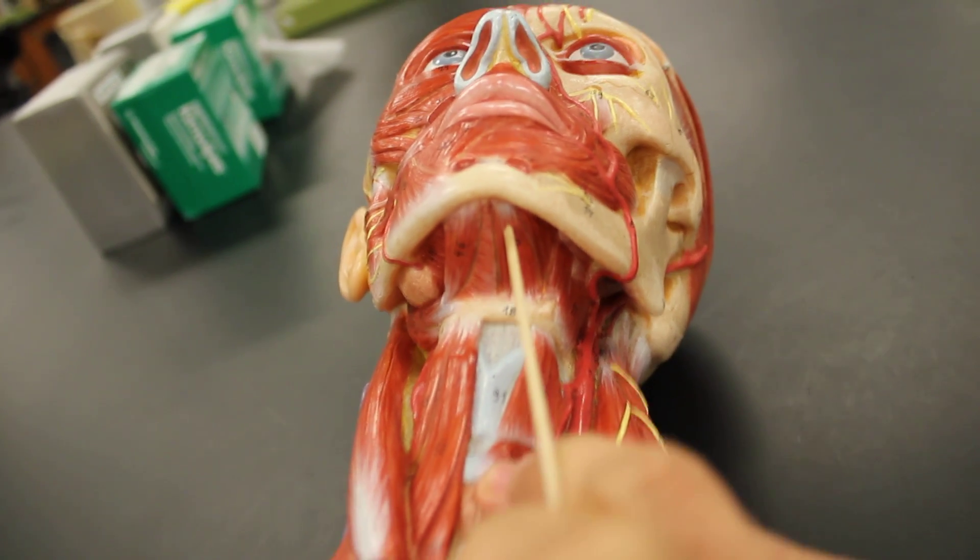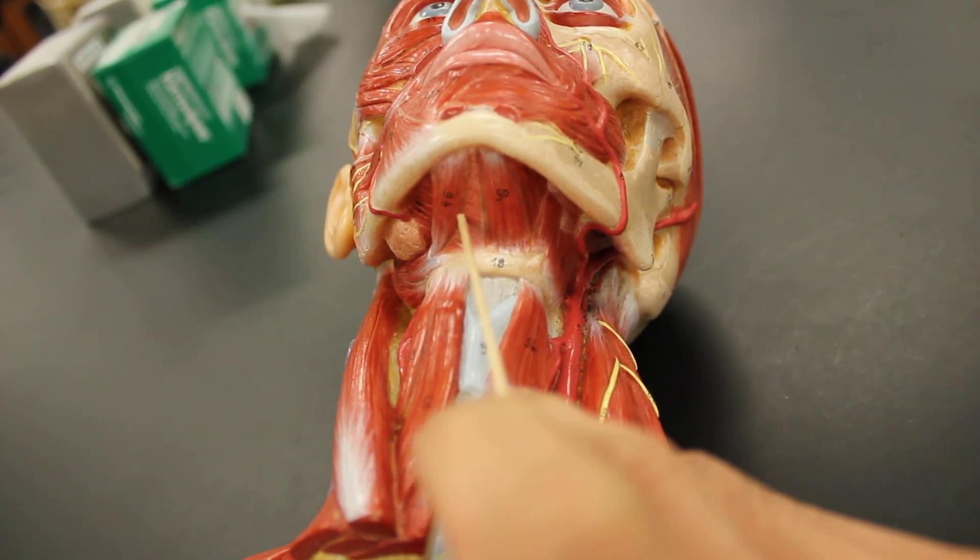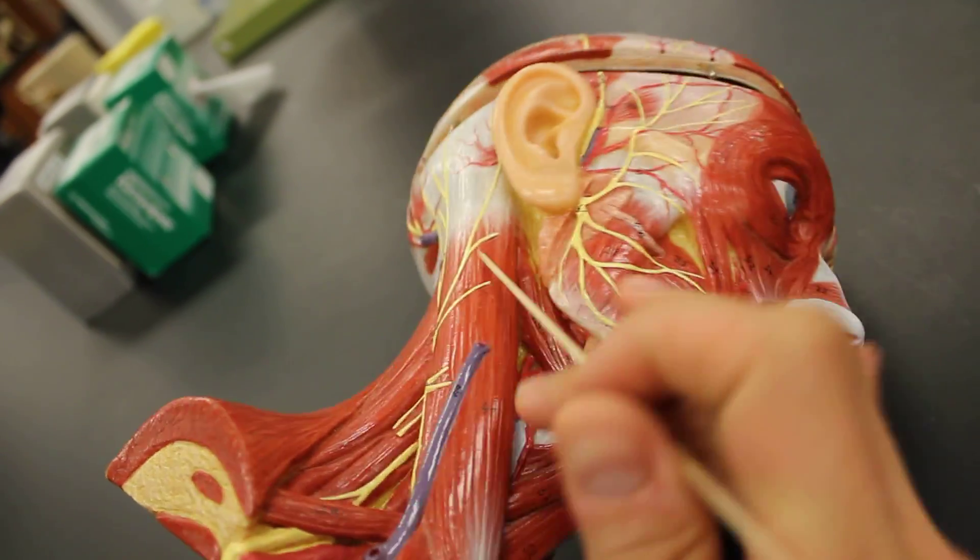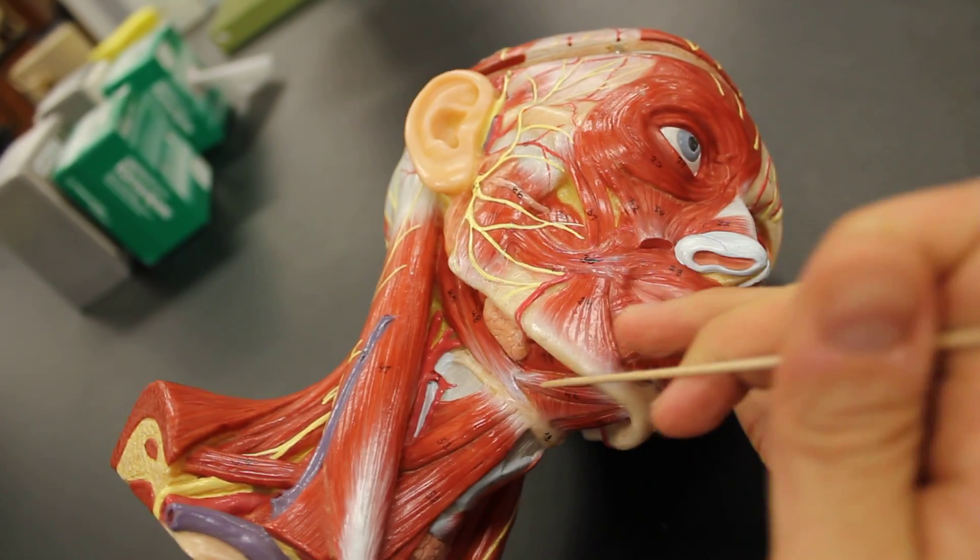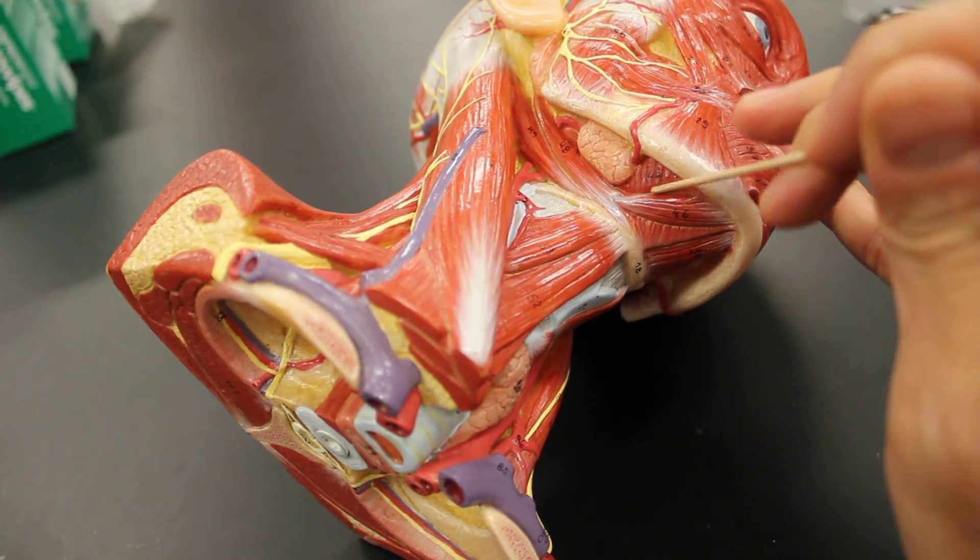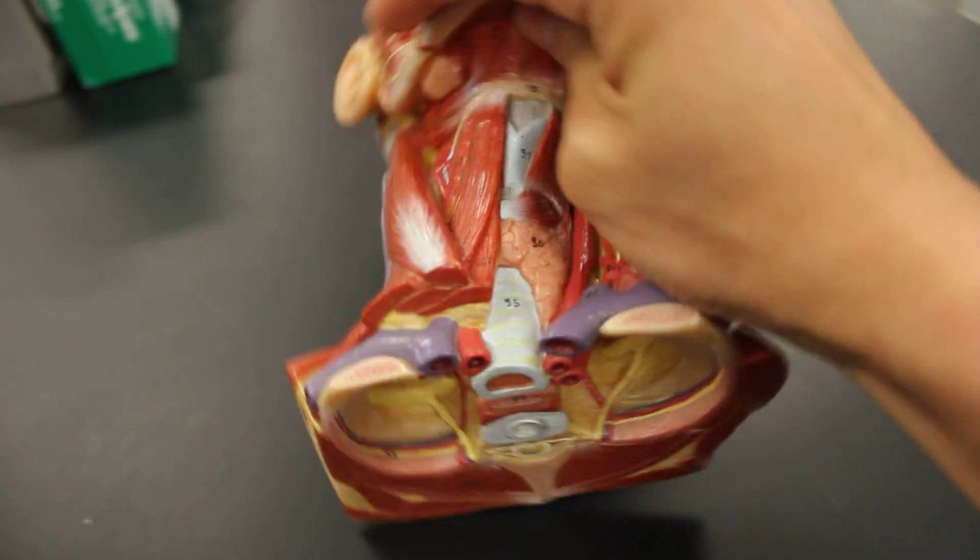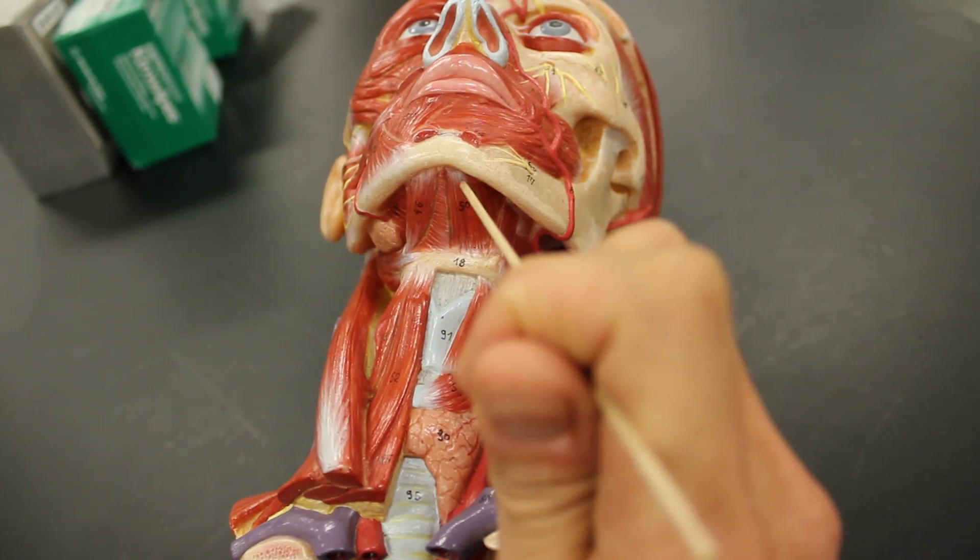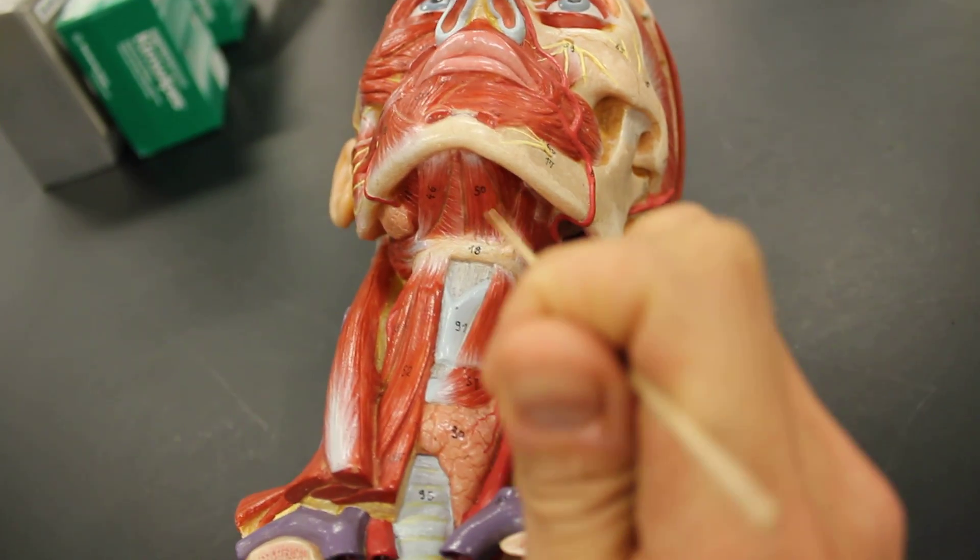Those are the four muscles: digastric with its two bellies, stylohyoid just anterior to that, mylohyoid coming across like a sheet of mylar, and then the geniohyoid coming down like this. So that's the suprahyoid muscles.